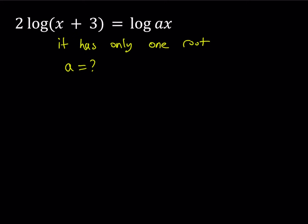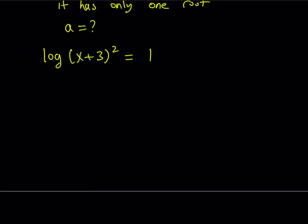The first thing I'm going to do is use the exponent rule. So I'm going to write this as log of (x plus 3) squared, and that's equal to log of ax. Now we're going to get rid of the logs and turn it into an equation. Since they have the same base, we can write it as (x plus 3) squared equals ax.